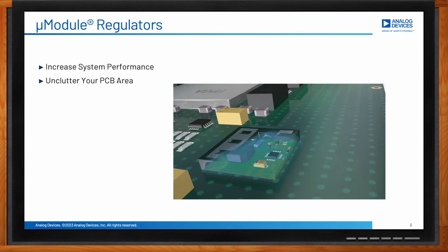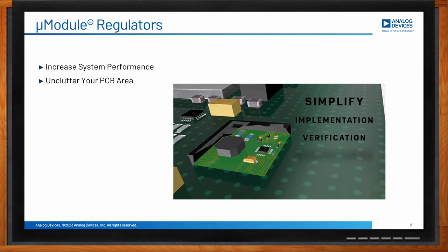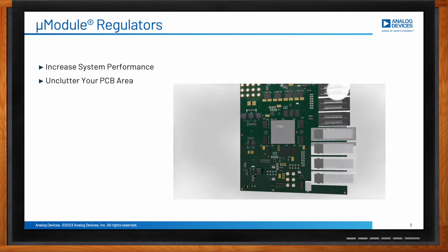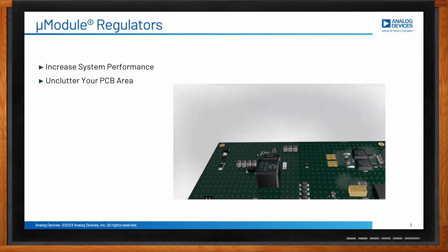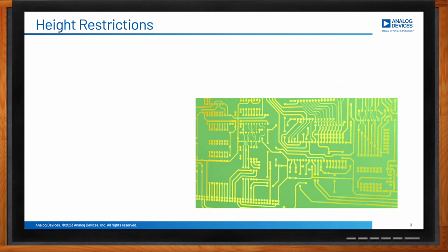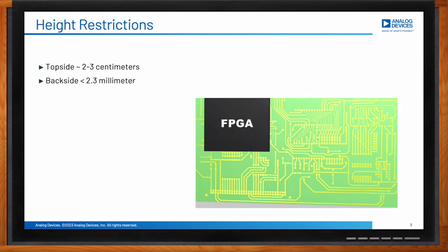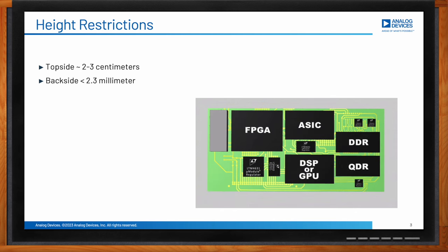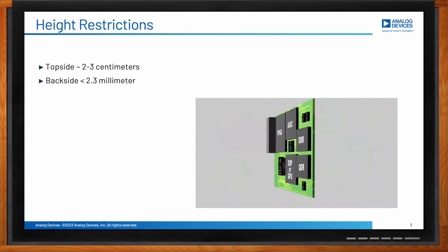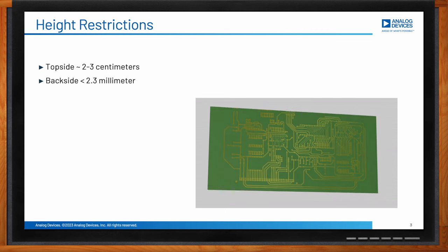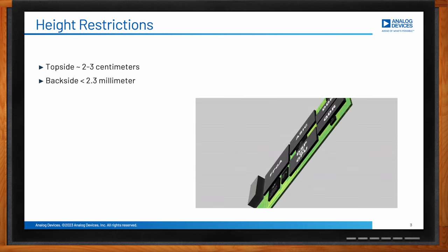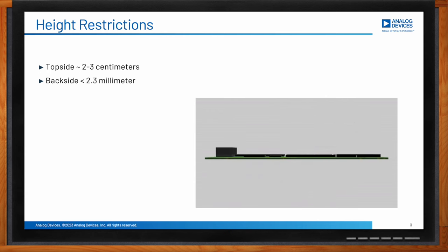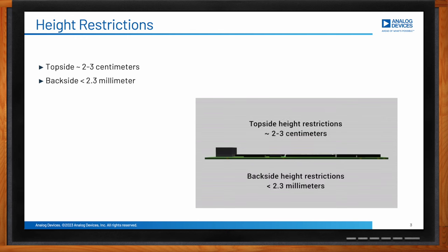The animation on this slide visualizes the benefits of using micromodule DC-DC regulators compared to the discrete solution. Are there any restrictions we need to keep in mind? Yes — the components on the top side of the PCB can reach a few centimeters in height, but industry standard practice limits the component height on the bottom side of the PCB to 2.3 millimeters. For that reason, the bottom side of a typical system board is often left unused, while the top side is extremely populated with FPGAs, ASICs, microprocessors, transceivers, connectors, memory ICs, and DC-DC regulators.